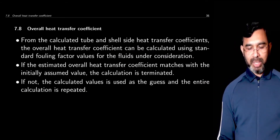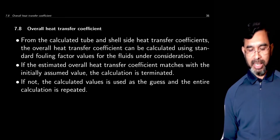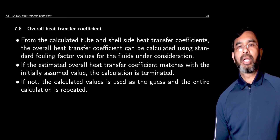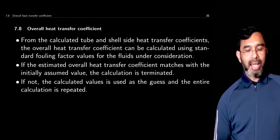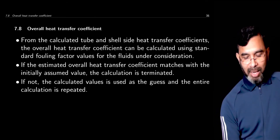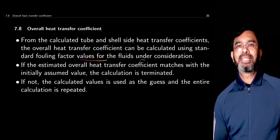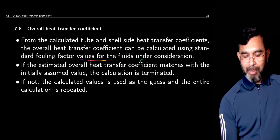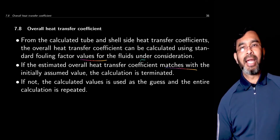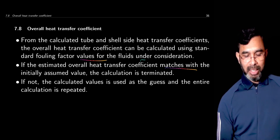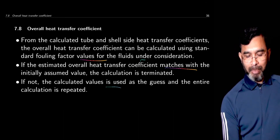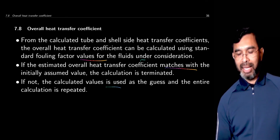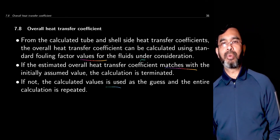Once the shell dimensions and baffle configurations are selected, the shell side heat transfer coefficient can be calculated from the flow and fluid properties. Knowing the flow rate determines the flow area, which gives the flow velocity of the shell side liquid, from which the shell side heat transfer coefficient is estimated. Once you have both the tube side and shell side heat transfer coefficients, along with the material of construction, you get the conduction heat transfer coefficient. Using standard fouling factor values for the fluids, you can calculate the overall heat transfer coefficient. If it matches the initial assumed value, the calculation is terminated; otherwise it is repeated with the new estimated value as the guess.